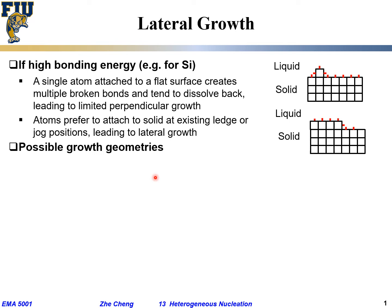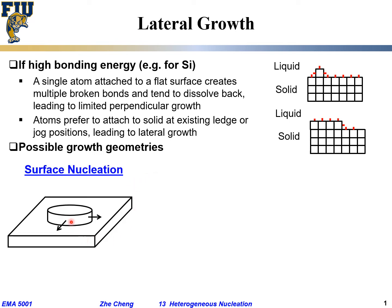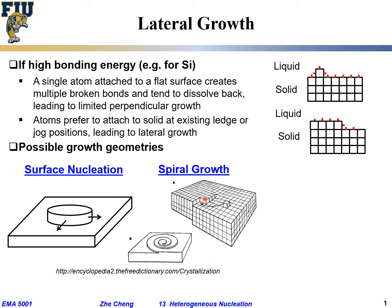To understand how it happens in reality: we have so-called surface nucleation. I have a step here, and where am I going to add extra atoms? Only at the so-called ledge location, for this step to grow along the interface horizontally. Another possibility is so-called spiral growth. I have a screw dislocation here, and you're only going to add atoms at the screw dislocation position — giving spiral growth.